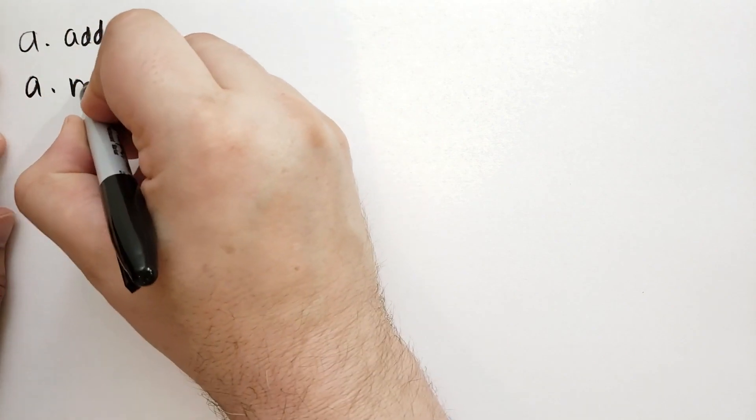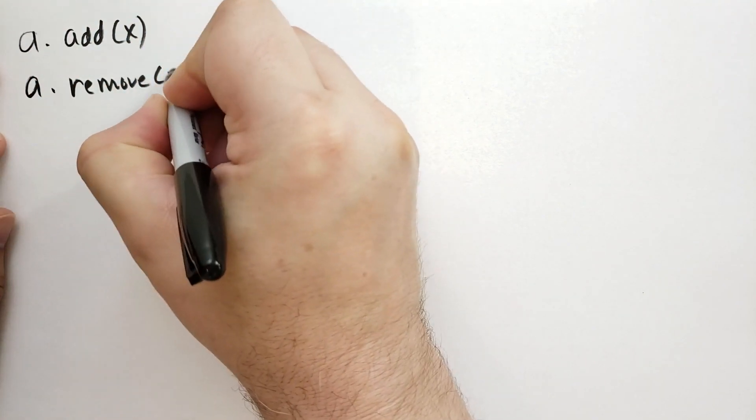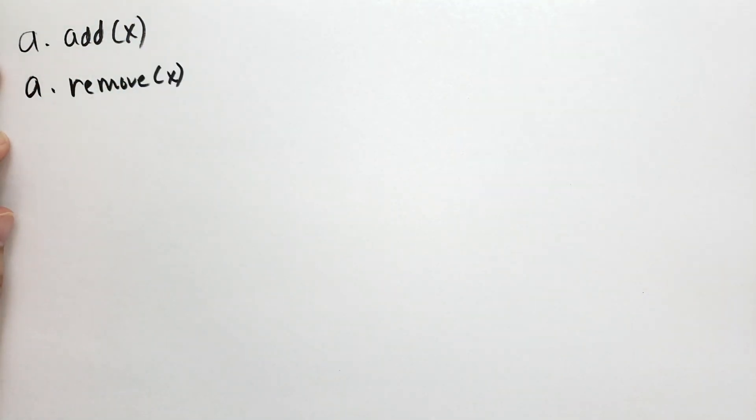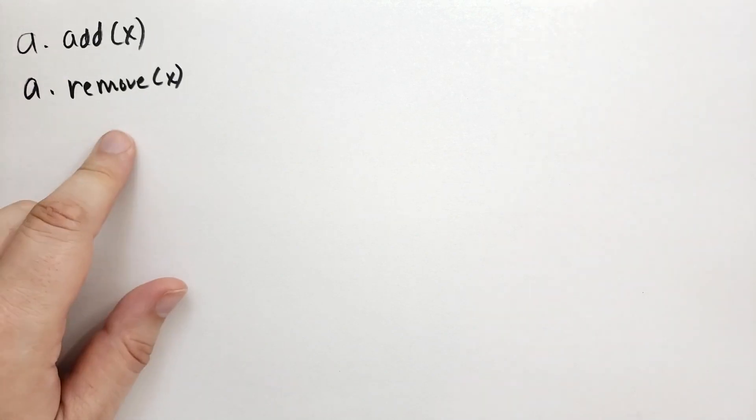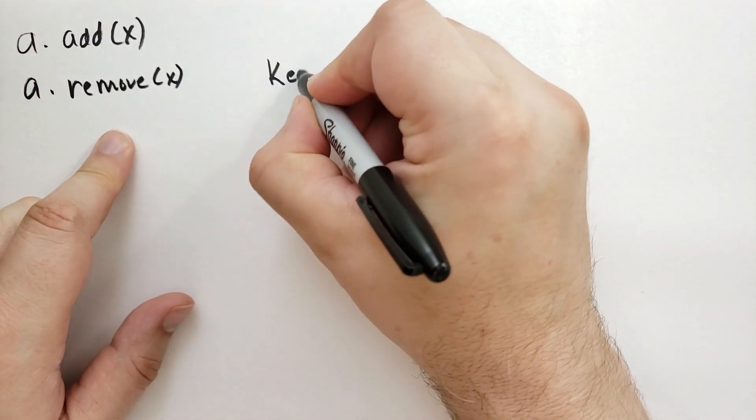Then we can remove. What this will do is it will remove the value from the set. If it's not there, then it will raise a key error.